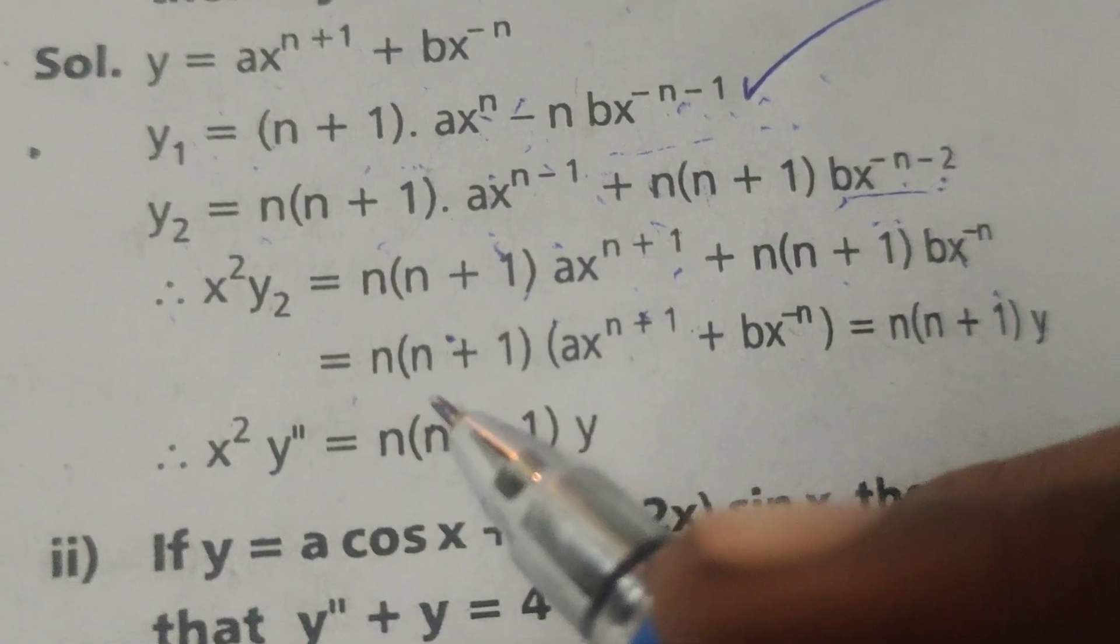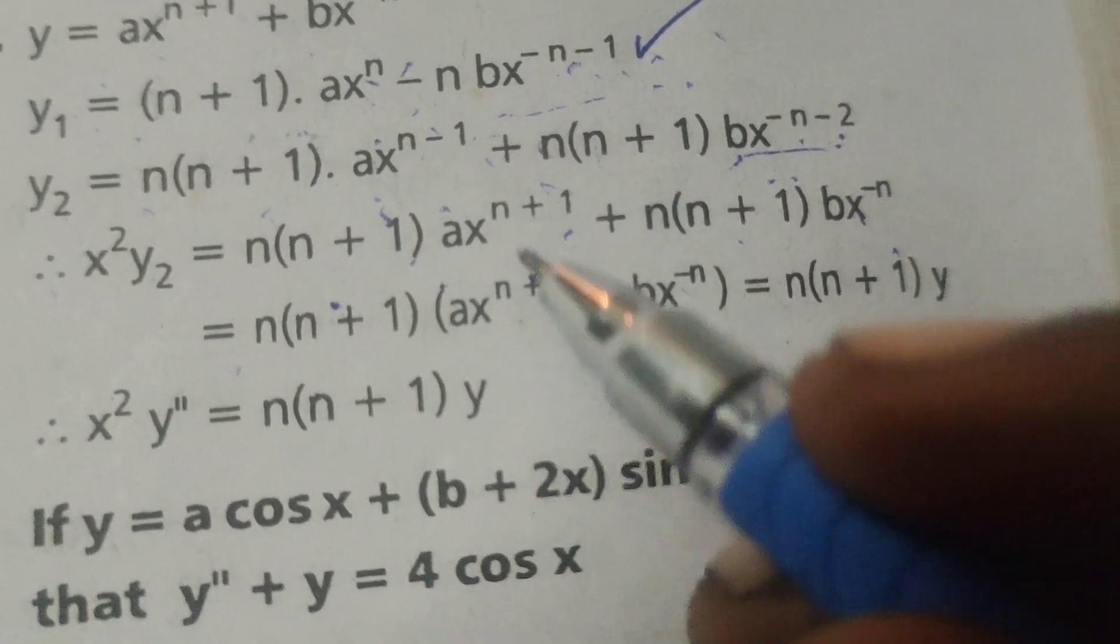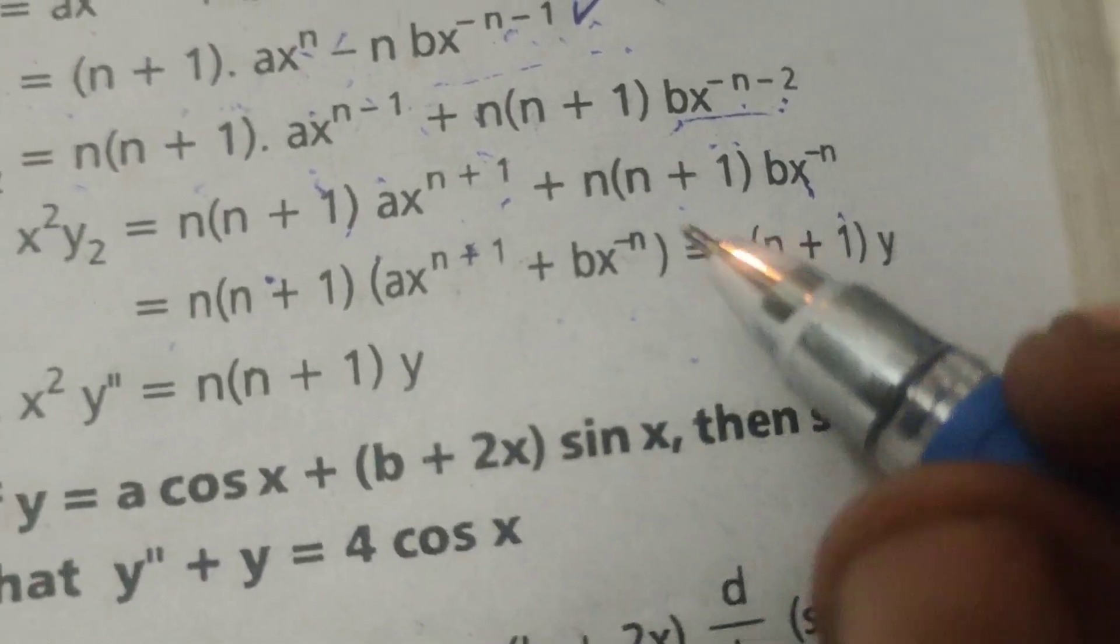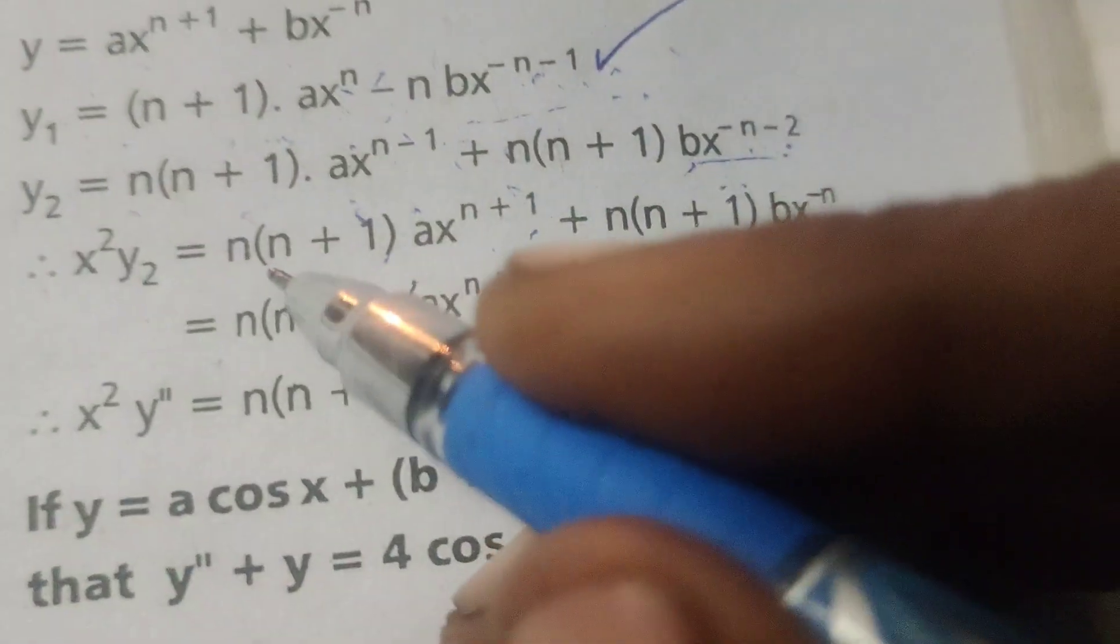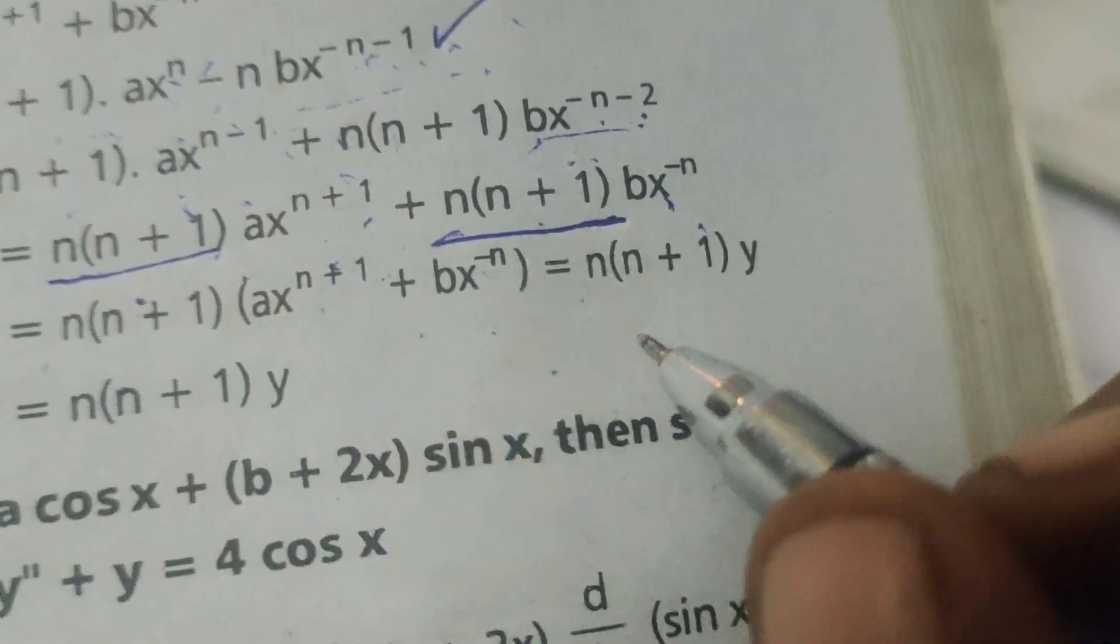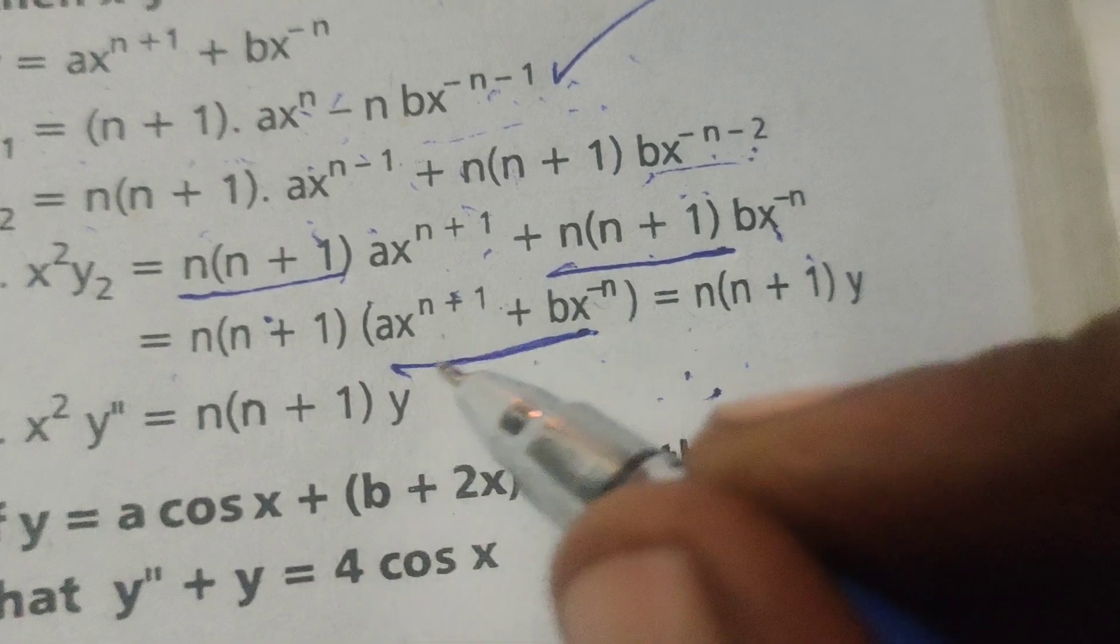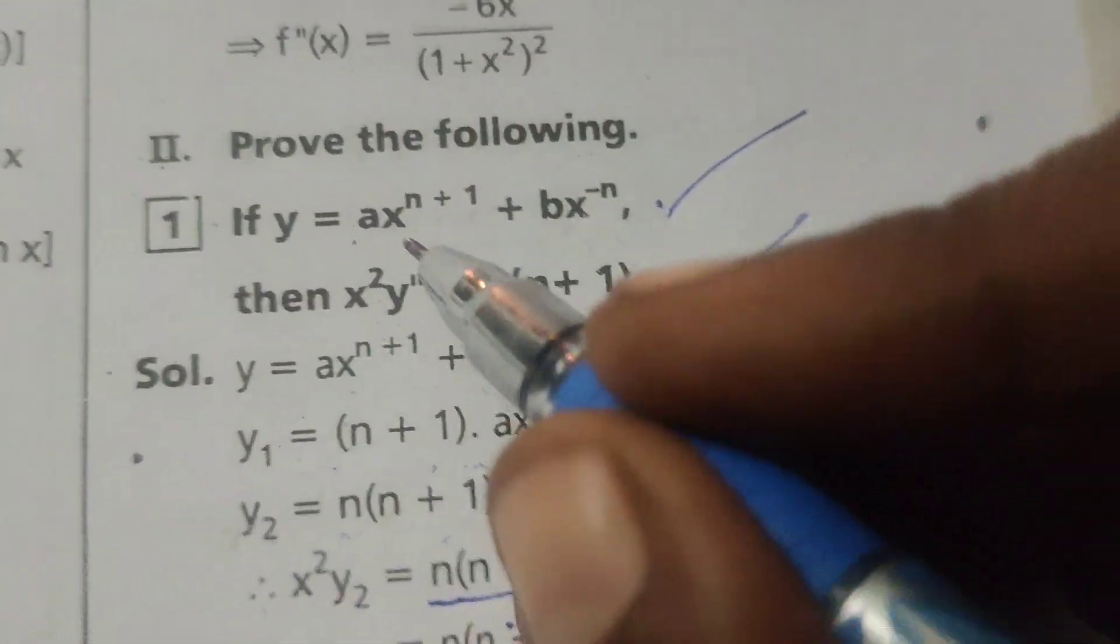Therefore n into n plus 1, ax power n plus 1 plus bx power minus n. Here n into n plus 1 is common. Therefore this is n into n plus 1 into y, the given problem.